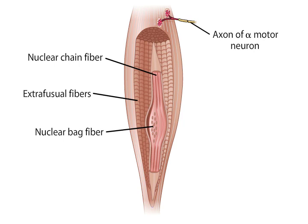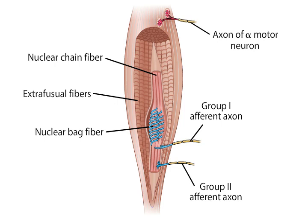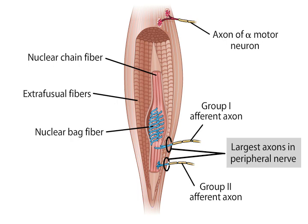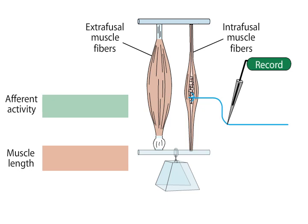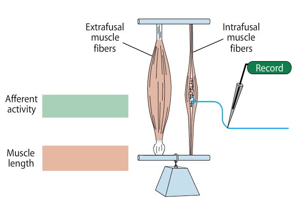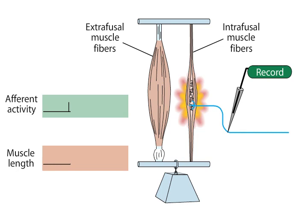Large diameter sensory axons — group 1a and group 2 afferents — are coiled around the intrafusal fibers. These afferents are the largest axons in peripheral nerves. Because action potential conduction velocity is a direct function of axon diameter, these fibers mediate very rapid reflex adjustments when the muscle is stretched. The stretch imposed on the muscle deforms the intrafusal muscle fibers, and in the afferent axon endings coiled around the spindle, mechanically gated ion channels become activated, initiating action potentials in these neurons.